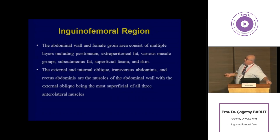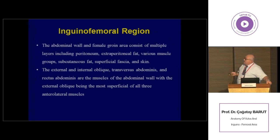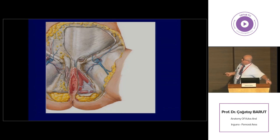This region contains multiple layers from inside to outside: peritoneum, extraperitoneal fat, various muscle groups including external and internal oblique muscles, transversus abdominis muscle, and on the midline the rectus abdominis muscle. Then there are subcutaneous fats, superficial fascia, and skin. On this figure we can see the skin, and below it the superficial fascia — the Camper's fascia — which contains fatty tissue. Below that, deep to it, is the deep fascia, partly visible here.